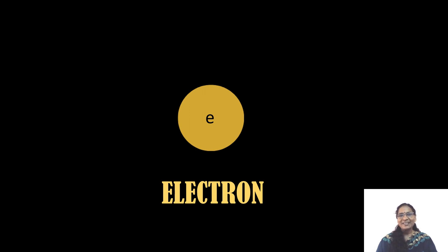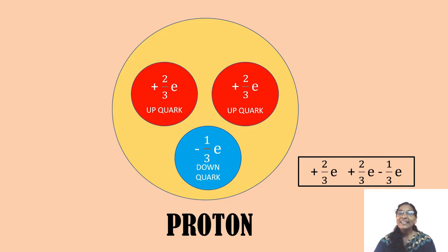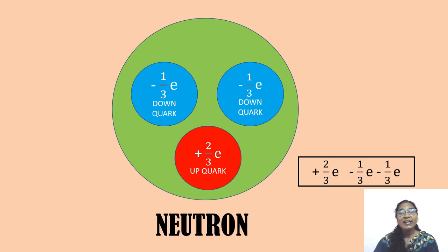Electrons are fundamental particles. In 1968, quarks were discovered - proton is no more a fundamental particle. Neutron is also not a fundamental particle.